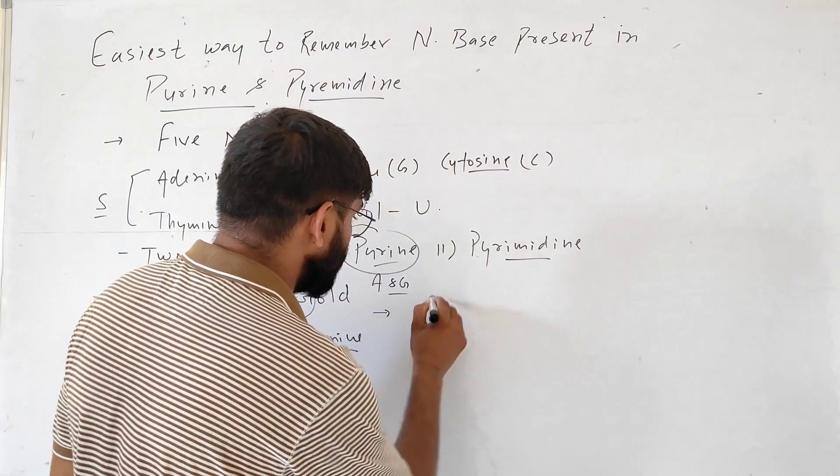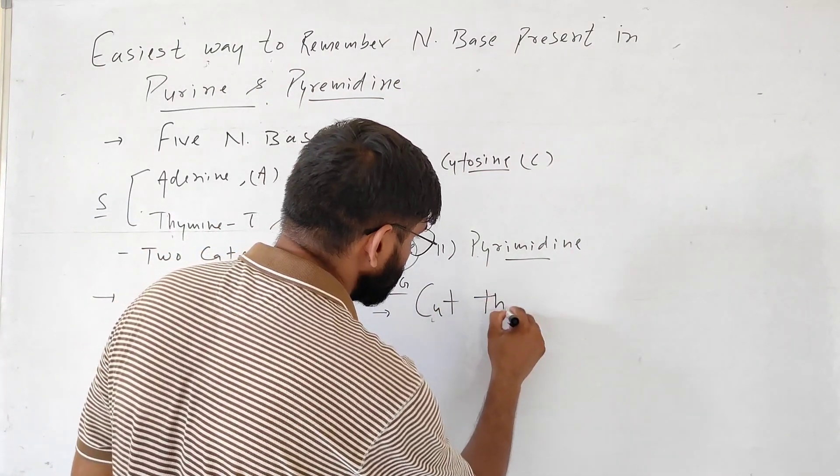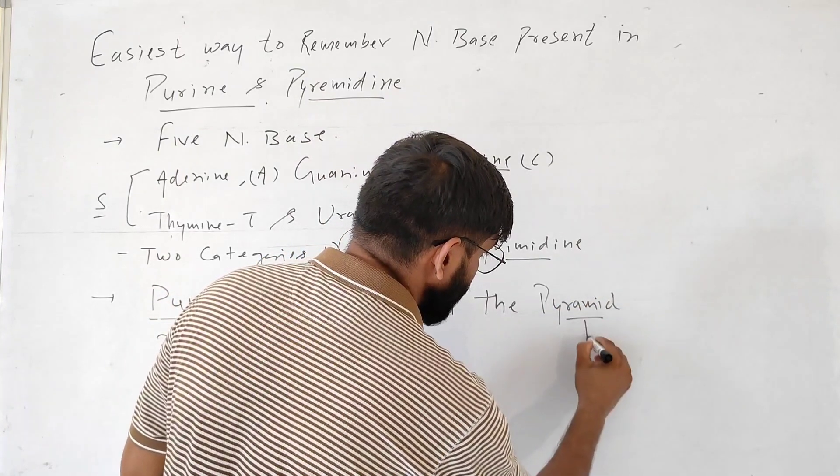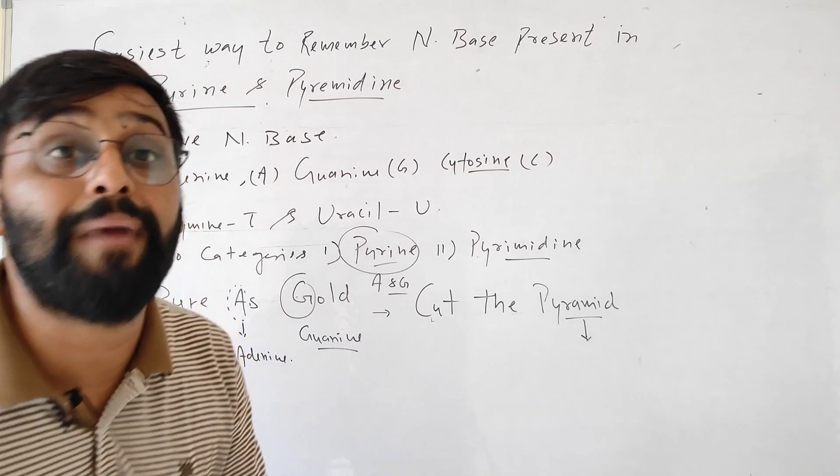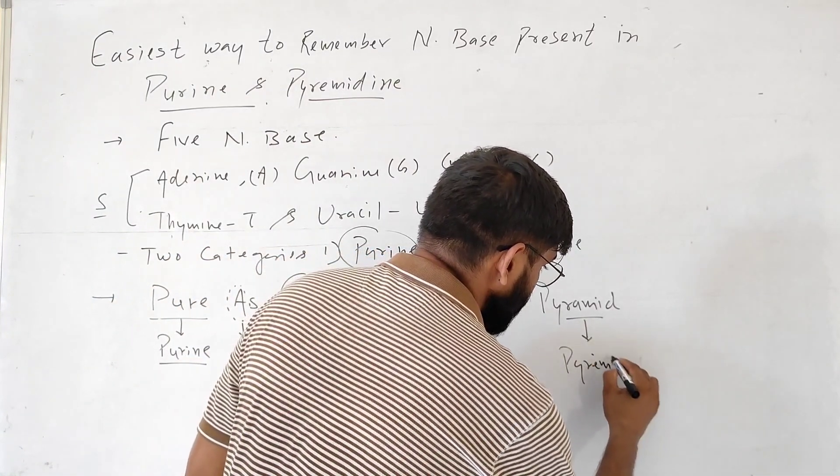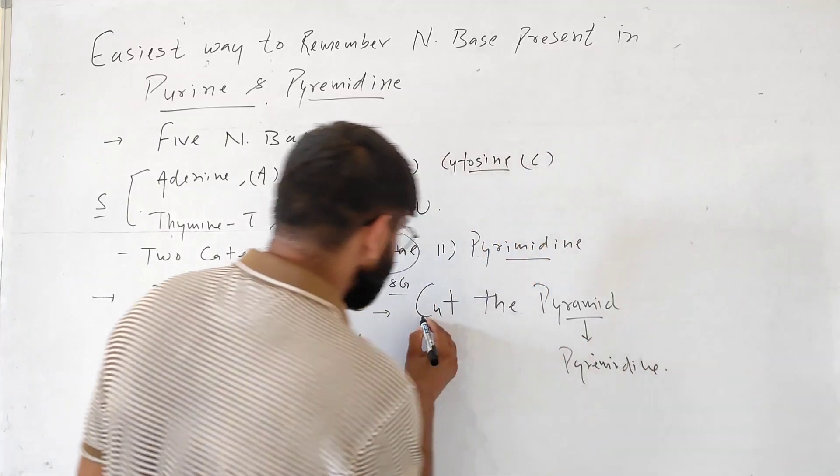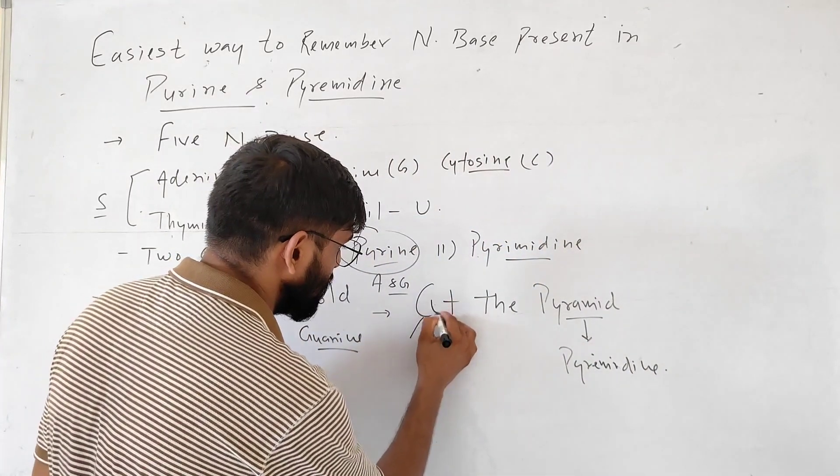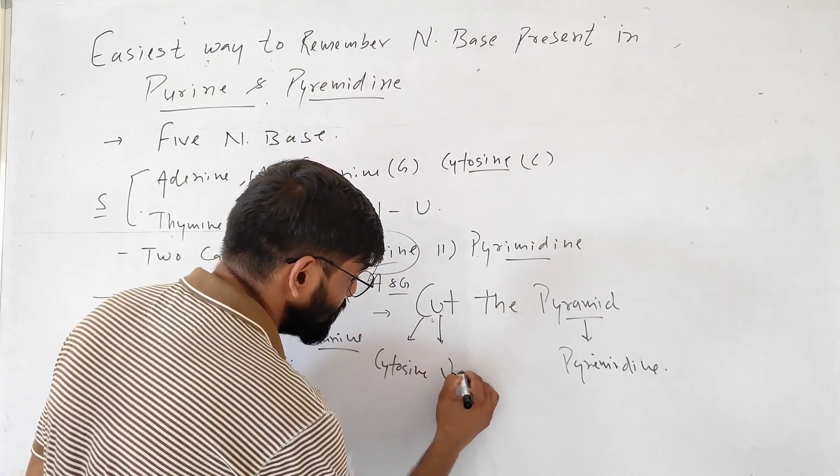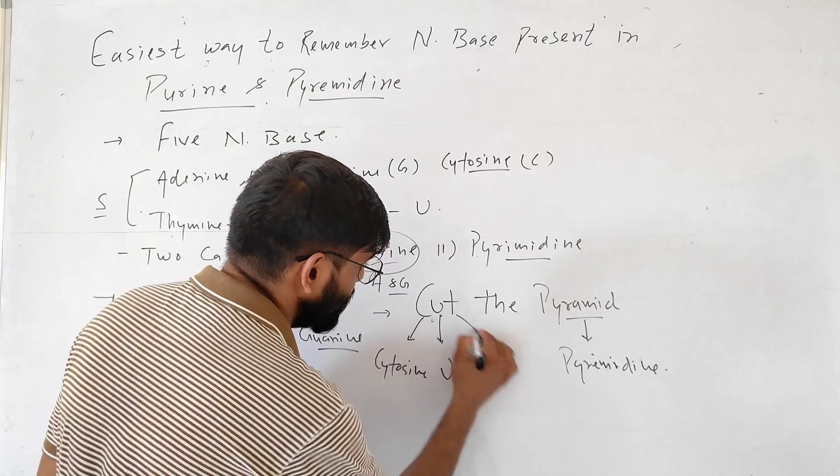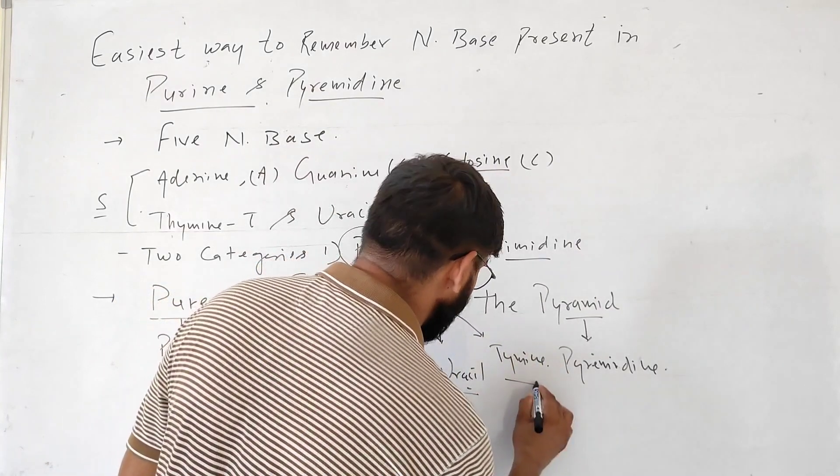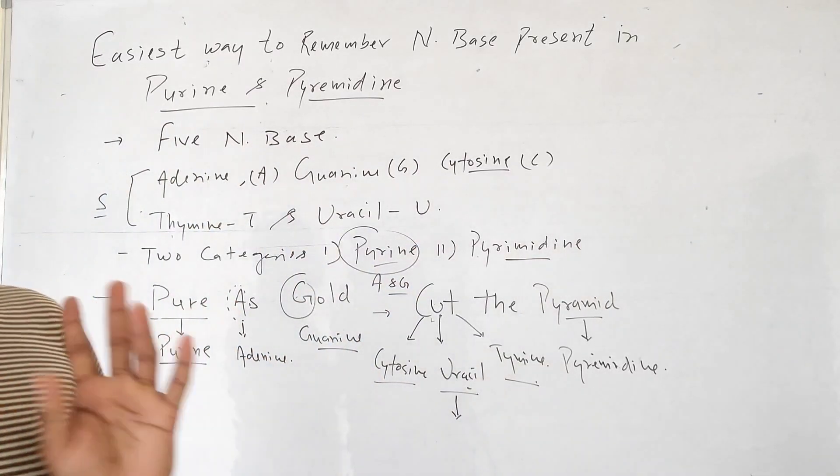Another sentence is cut the pyramid. Pyramid here means pyrimidine. C means cytosine, U means uracil, T means thymine. So cytosine, uracil, and thymine come under pyrimidine.